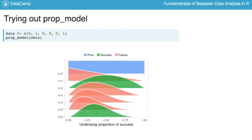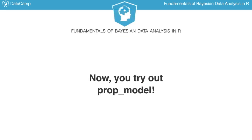That was a quick little example of a simple Bayesian model. Note that prop_model isn't part of any R package — I just made it myself. But at the end of this course, you will know enough to implement it yourself too. Now it's your turn to try out prop_model in a couple of exercises.